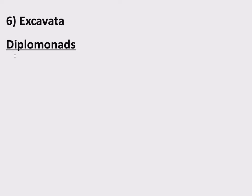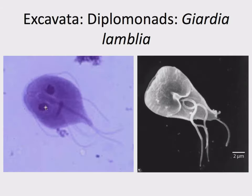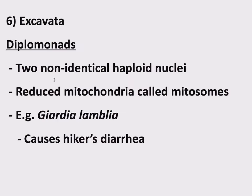Excavata includes a group called diplomonads. The names often provide clues — 'di' should mean something to you: di means two. There's got to be something about these things that they have two of. The thing they have two of is nuclei. These kind of look like eyeballs — remember, this is a single-celled organism with two nuclei. If you look more closely and sequence these genomes, they're actually not identical. Diplomonads have two non-identical haploid nuclei, which is weird. We have two copies of each gene but put them in a single diploid nucleus. The reason why they keep their non-identical copies in two separate haploid nuclei is not well understood.